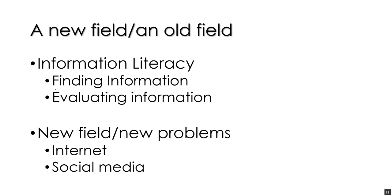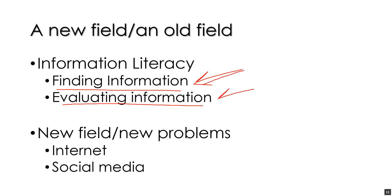Information literacy is about finding information and then evaluating that information. You can find lots of information — are you looking in the right place? Is this the right information? And then you have this information — how do you know it's good? This has been the older part in that college students forever have been trained to do this. However, now we need to recognize that we have this electronic world, we have social media, we have the internet. So we have to expand our understanding of finding and evaluating information from the library to the internet.